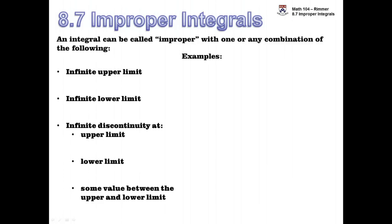Let's look at an example of each. Here's an integral from 1 to infinity of e to the negative 2x. This integral has an infinite upper limit, so it is an improper integral.